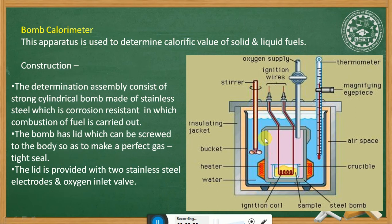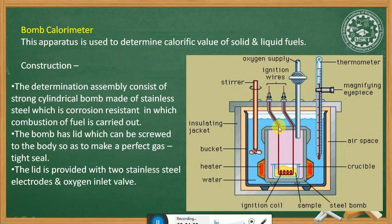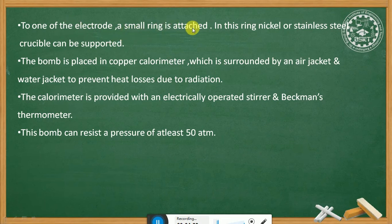The bomb lid, when tightened, forms a gas-tight seal. To one of the electrodes, a small ring is attached. In this ring, a nickel or stainless steel crucible can be supported. These two electrodes are attached to the bottom of the ring.